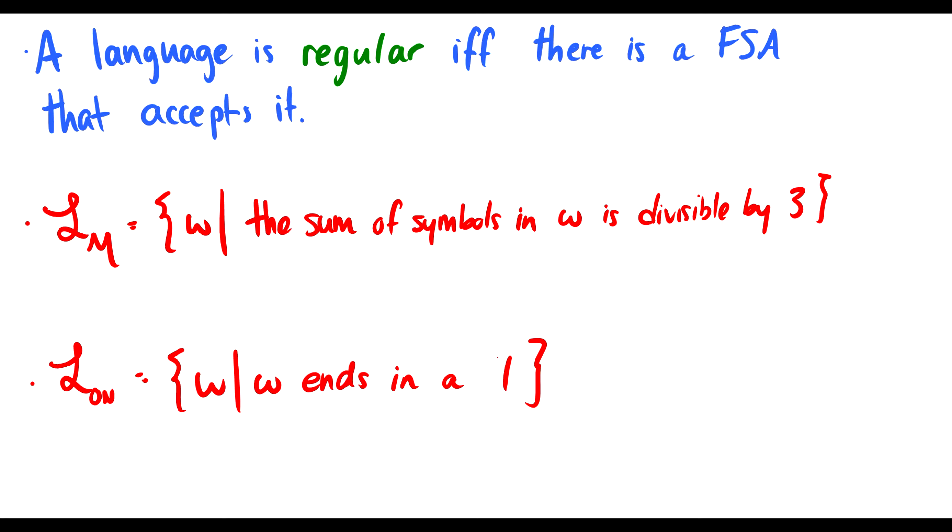So for instance, in the last video, we looked at a finite state machine that accepted numbers divisible by three. So the language M could be the set of strings W, such that the sum of symbols in W is divisible by three. We also looked at the on and off switch, which is the language that accepts strings W, such that W ends in a one.